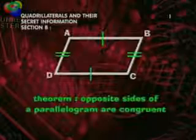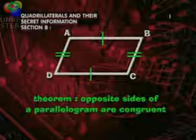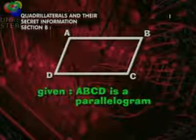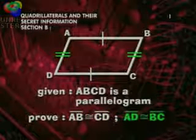Theorem: opposite sides of a parallelogram are congruent. Let's prove it. Given that ABCD is a parallelogram, prove that segments AB and CD are congruent, and segments AD and BC are congruent.